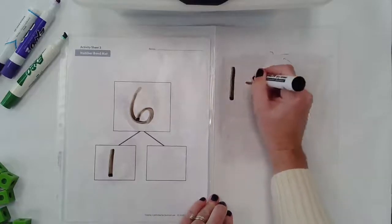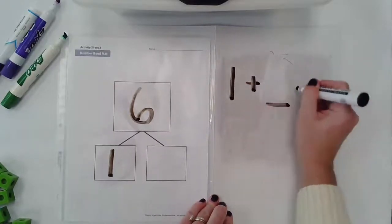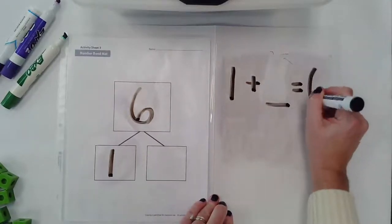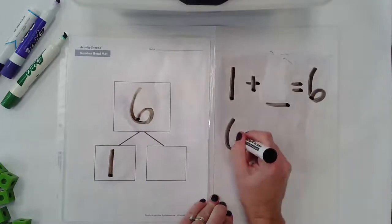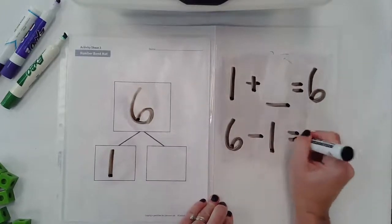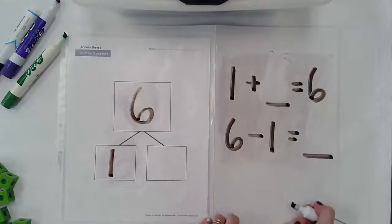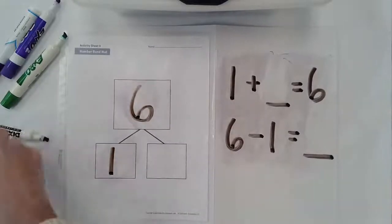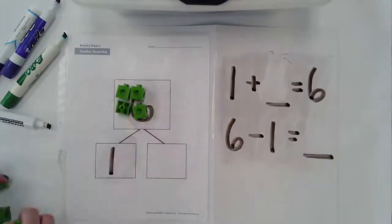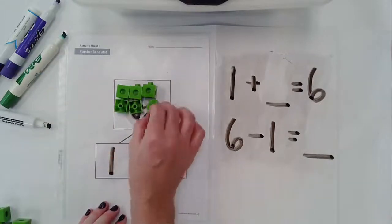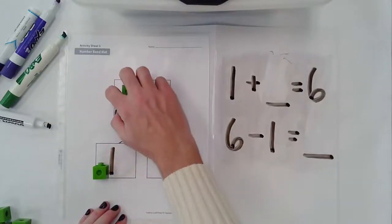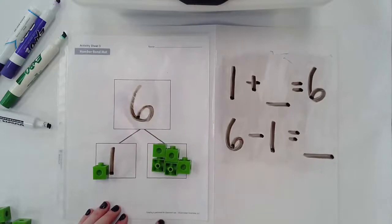Let's use addition. So one plus what could give me six, and six take away one give me what number? So I'm going to use my manipulatives again. I have six total. I give one to this addend. How many am I going to have left over?